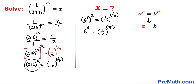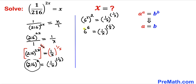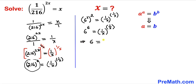Now let's recall this basic rule of exponents: if a^a = b^b, then we can conclude that a = b. Here we have 6^6 = (1/x)^(1/x), so we conclude that 6 = 1/x.